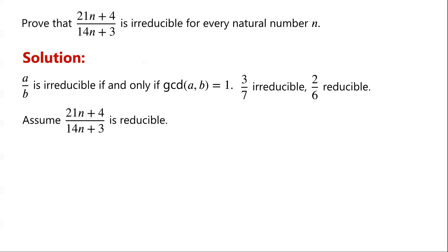Now we assume that (21n + 4) / (14n + 3) is reducible. Then we let the greatest common divisor of 21n + 4 and 14n + 3 equal d, which is greater than 1. This is because n is a natural number, so both numerator and denominator are positive integers.